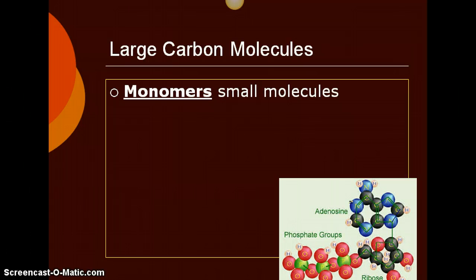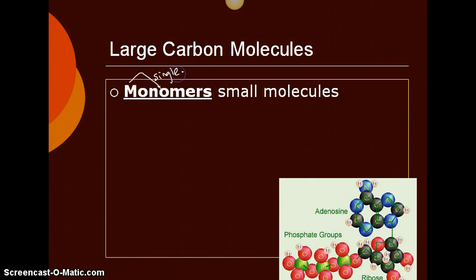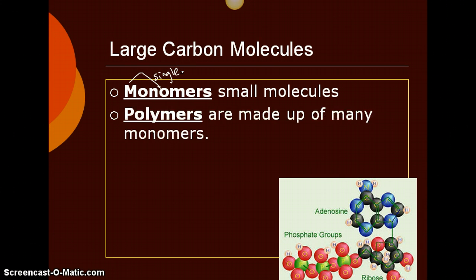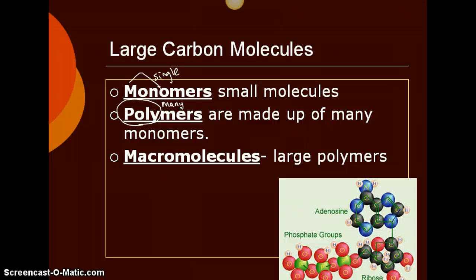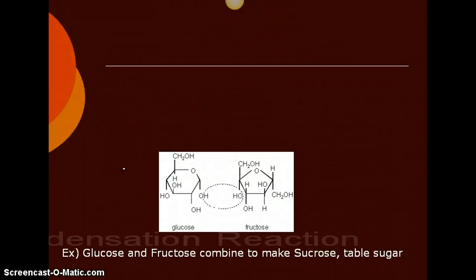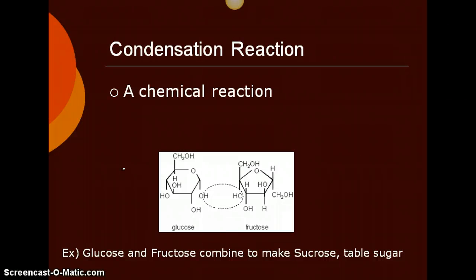If we look at carbon molecules, we start with something simple, which is called a monomer, and that's a small molecule. If you break down the word, mono might make you think of single, so it's a single small molecule. Polymers are made up of many monomers, so poly being many. And macromolecules are just really large polymers, so macro meaning really big molecule. These three terms you'll see as we go through the next few slides. How do we make polymers, and how do we go from polymers back to monomers?